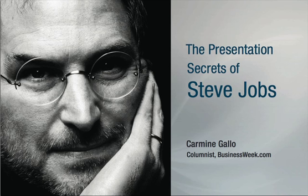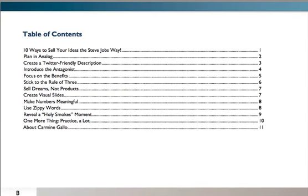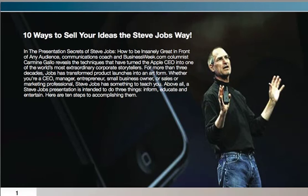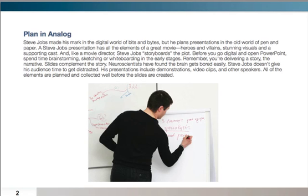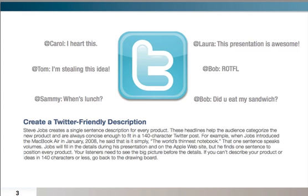So, 'The Presentation Secrets: Ten Ways to Sell Your Ideas the Steve Jobs Way.' First, you should plan analog — use flip charts and whiteboards to do that. Then, create a Twitter-friendly description. Apple always has one sentence, like 'the world's thinnest notebook' for a product, or when they launched the iPod it was 'a thousand songs in your pocket' — just a benefit-driven one-liner, absolutely amazing.